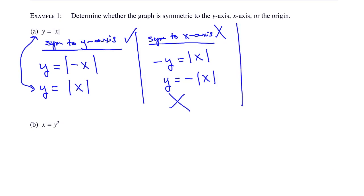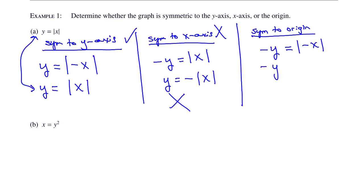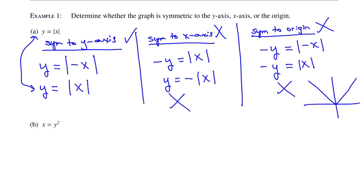Finally, test symmetry to the origin by plugging in both negative y and negative x. That gives negative y equals the absolute value of negative x, which simplifies to negative y equals the absolute value of x — the same equation as the x-axis test. So it's not symmetric to the origin either. Notice the graph of y equals absolute value of x shows clear symmetry over the y-axis.